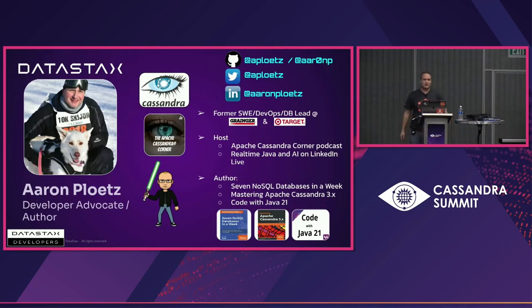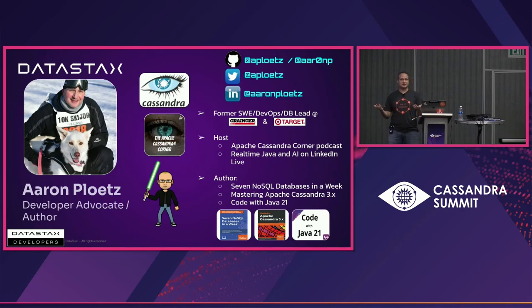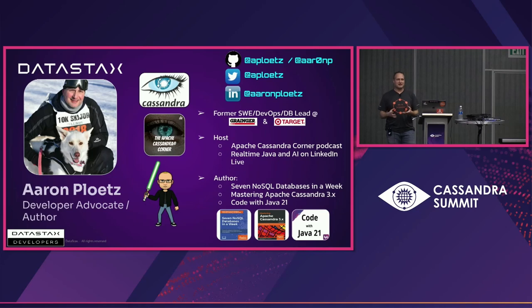Real quick about me. I'm a developer advocate with DataStax. I've done a few books — two on distributed databases and one on Java 21 that's coming out hopefully by the end of the month. In terms of e-commerce experience, I spent a lot of time working at WW Grainger — that was my first interaction with Cassandra back in 2012. Then I spent about six years as the engineering lead for the NoSQL team at Target. That's where this whole talk came from.